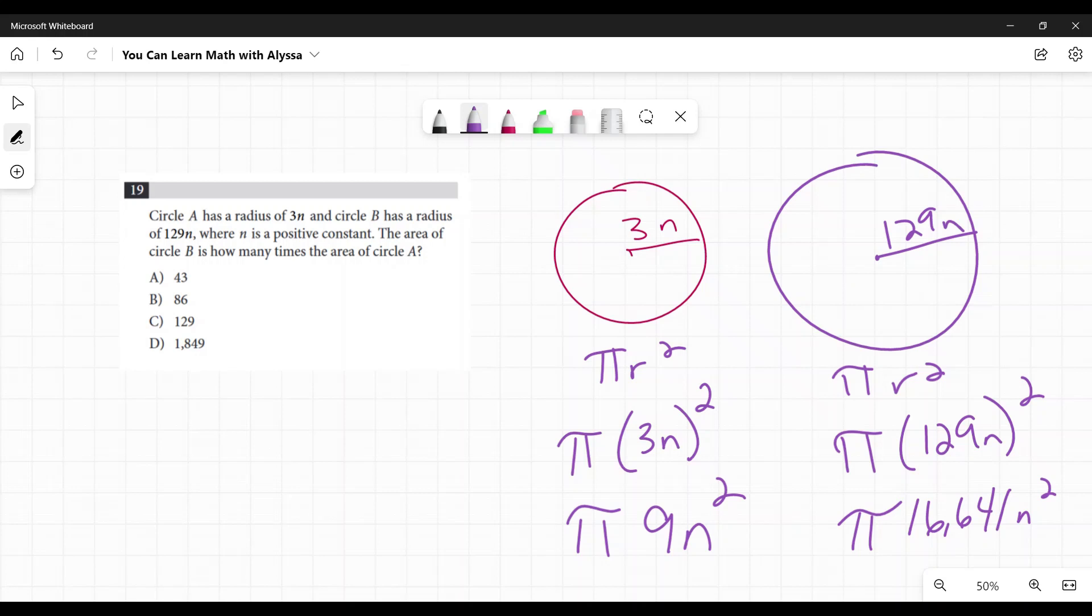So I want to know how many times bigger is this circle. Since I want to know how many times bigger I'm going to be dividing. So I have 16,641 n squared times pi divided by 9n squared times pi. Those n squareds cancel out. Those pi's cancel out. I'm left with 16,641 divided by 9. And when I do that, I get 1,849.